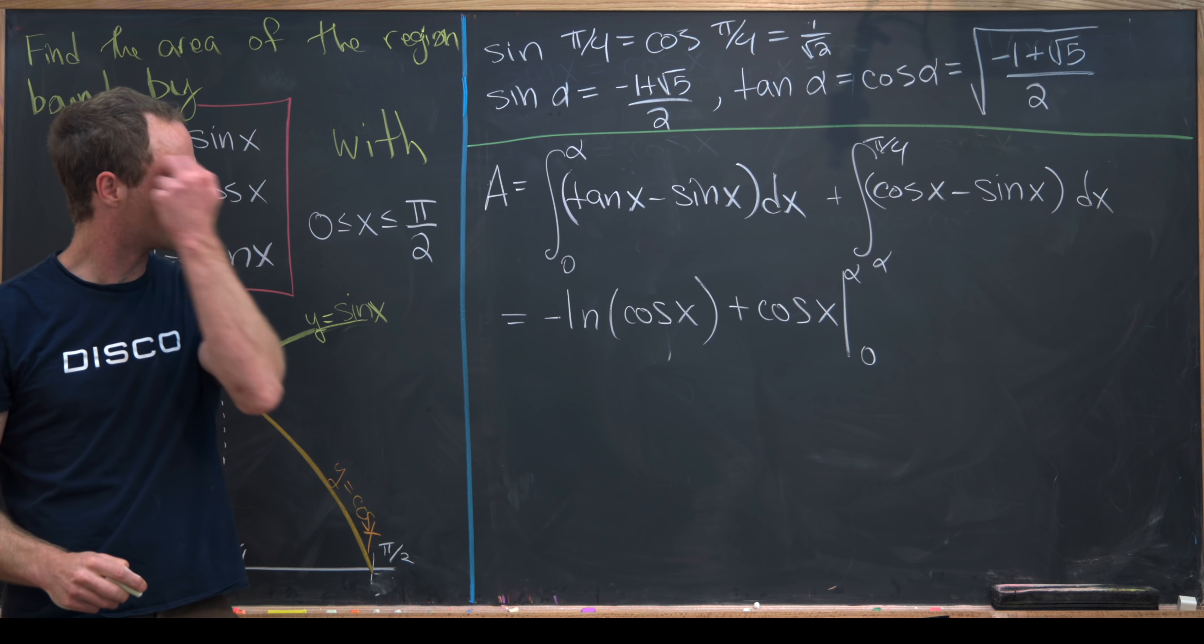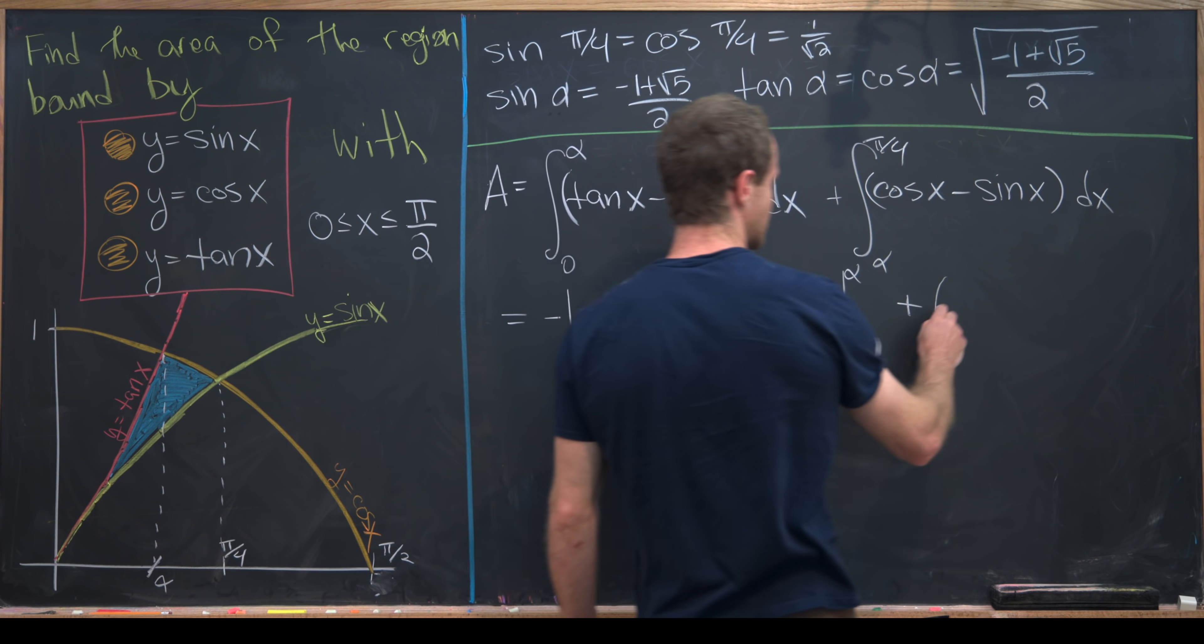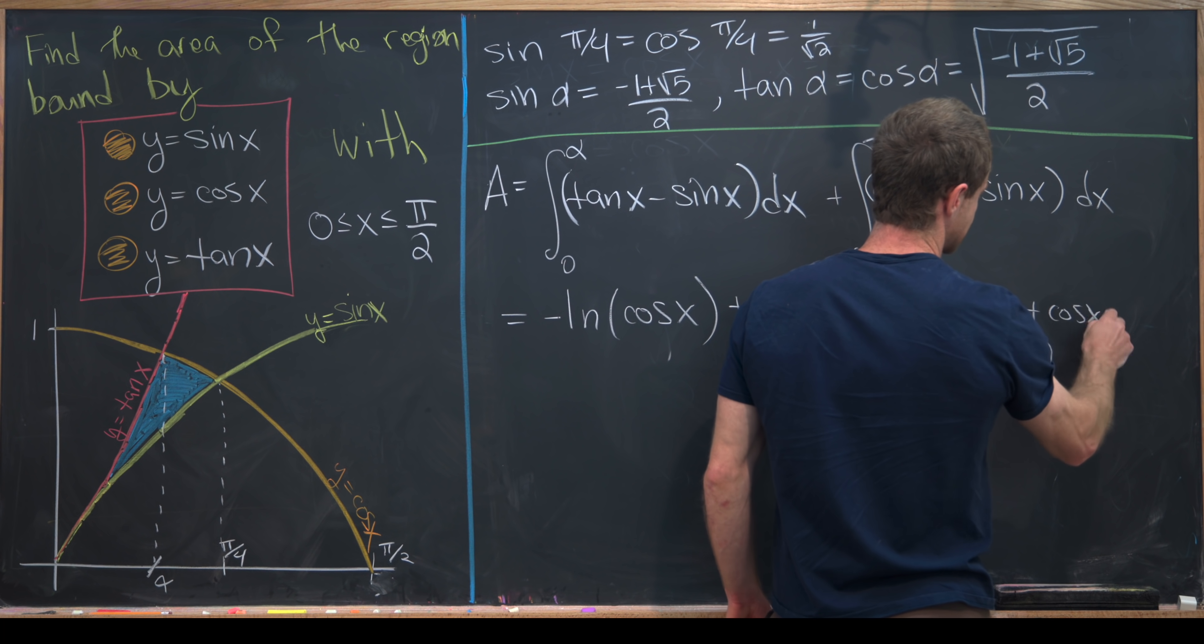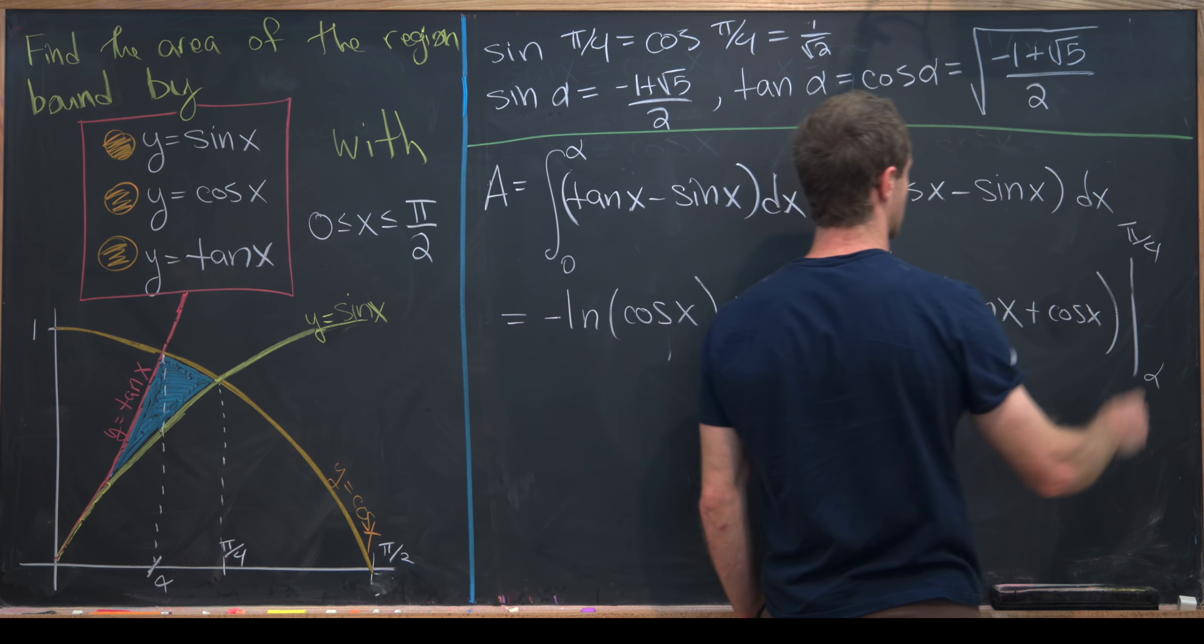Then we'll do the same kind of thing over here. Taking antiderivatives, we have that this will be sine of x and then this will be plus cosine of x. We need to evaluate that from alpha to pi over 4.